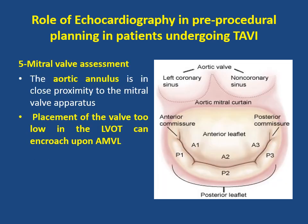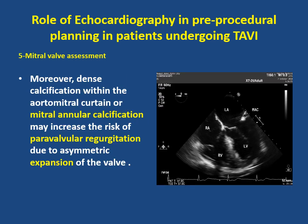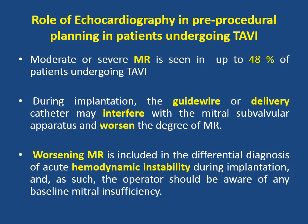Another very important point is mitral valve assessment. The aortic annulus is in close proximity to the mitral valve apparatus. Placement of the valve too low in the LVOT can encroach upon the anterior mitral valve leaflet. Dense calcification within the aorto-mitral curtain or mitral annular calcification may increase the risk of paravalvular regurgitation due to asymmetric expansion of the valve. Moderate to severe mitral regurgitation is seen in up to 48% of patients undergoing TAVI.